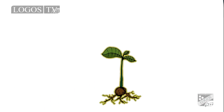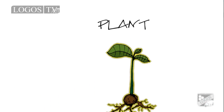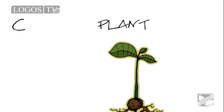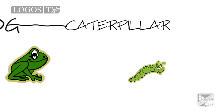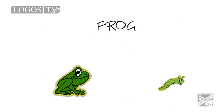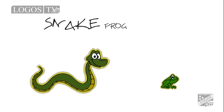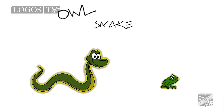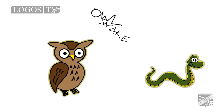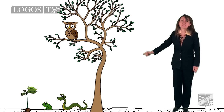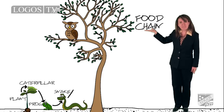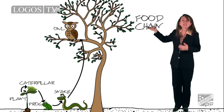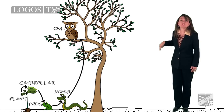Look at this picture. The plant is being eaten by the caterpillar. The caterpillar is eaten by the frog. Now the snake is going to eat the frog. And the owl is going to eat the snake. This is what we call a food chain. Sometimes the man is on top of this food chain.